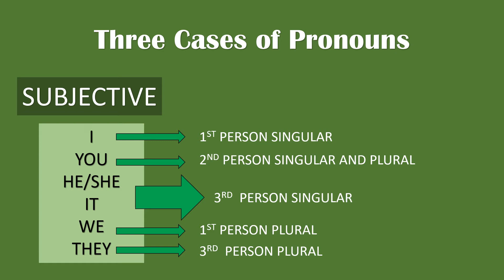First person is the I and we perspective. Second person is the you perspective. Third person is the he, she, it, and they perspective. When we talk about ourselves, our opinions, and the things that happen to us, we generally speak in the first-person point of view. The second-person point of view belongs to the person or people being addressed, and that is the you perspective. The third-person point of view belongs to the person or people being talked about.